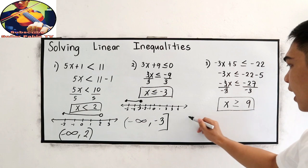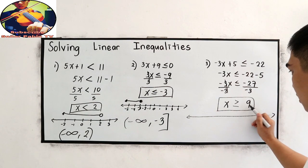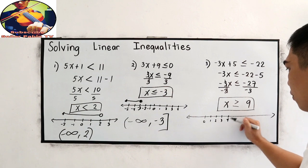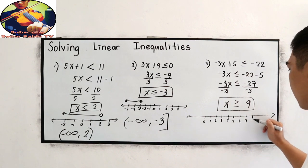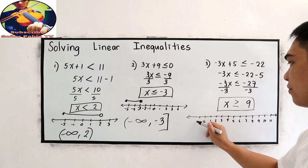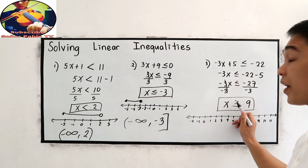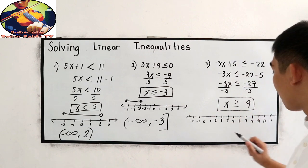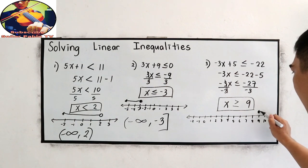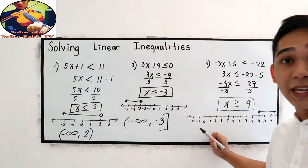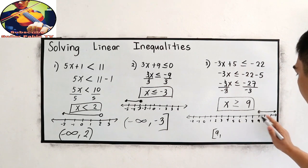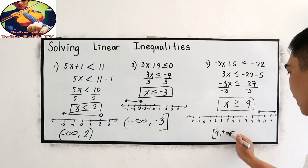Now let us plot on the number line. We mark 0, 1, 2, 3, 4, 5, 6, 7, 8, 9, 10, 11, and negative 1, negative 2, and so on. Since x is greater than or equal to 9, the value 9 is included. We shade to the right toward positive infinity. Our interval notation is a closed bracket at positive 9 going to positive infinity.